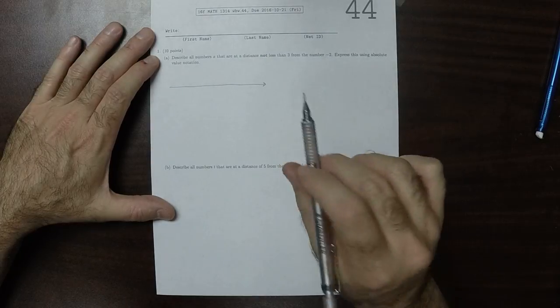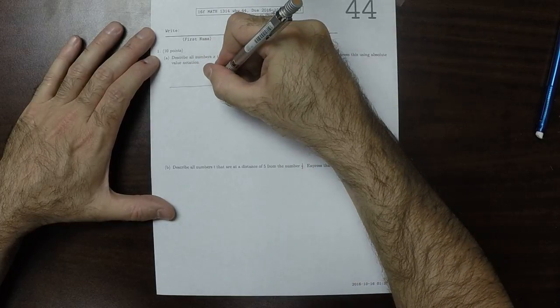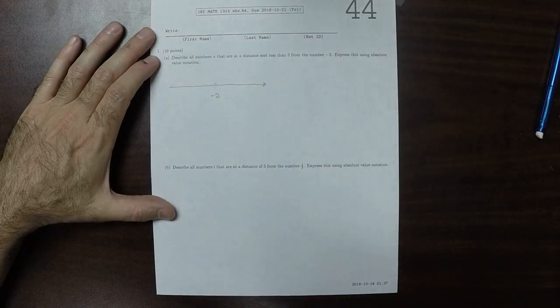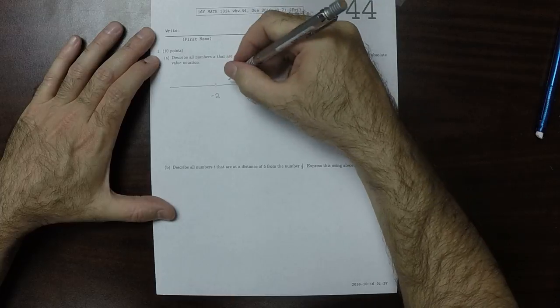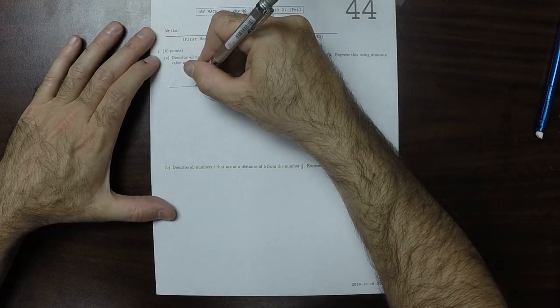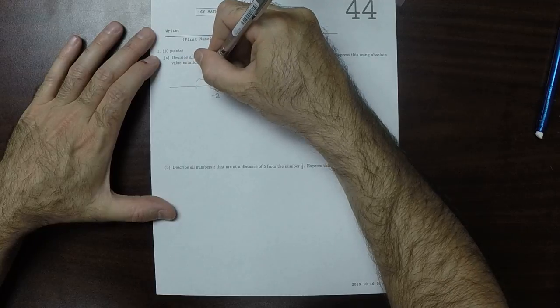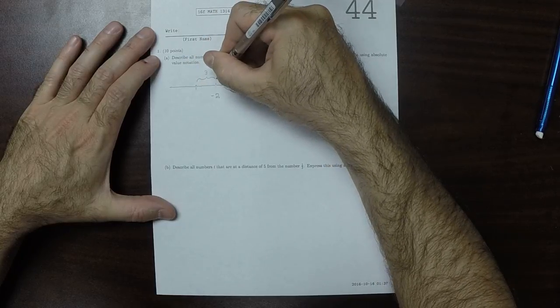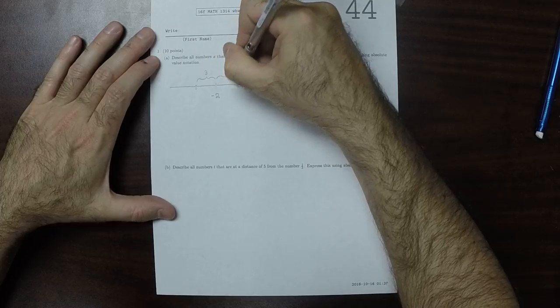And we're interested in the point negative 2. So here's the point negative 2. And then if we move a distance of 3, say here and here, so this is distance 3, and this is distance 3.